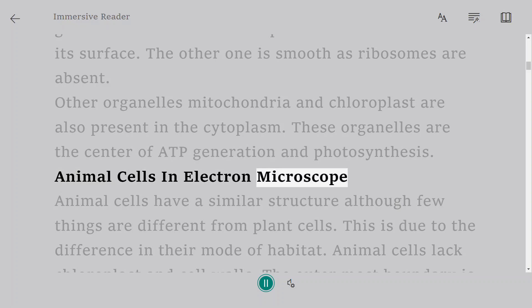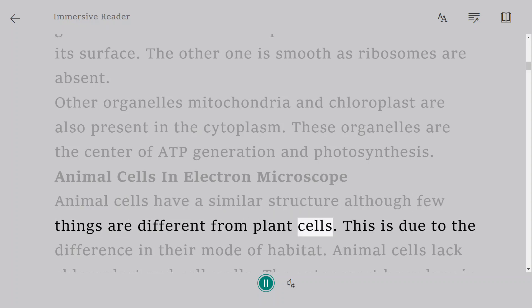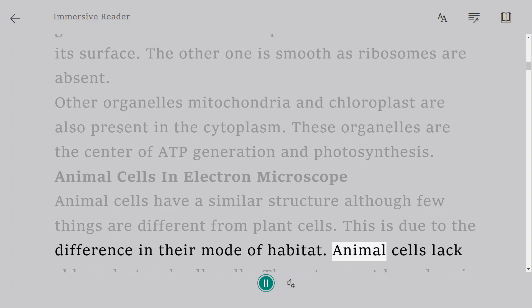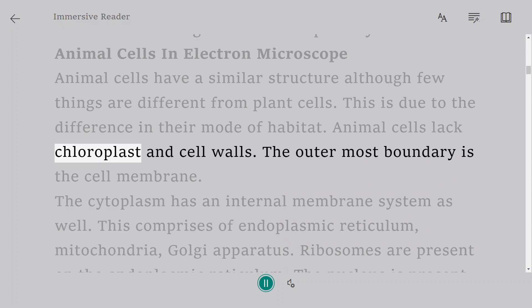Animal cells have a similar structure although few things are different from plant cells. This is due to the difference in their mode of habitat. Animal cells lack chloroplast and cell walls.